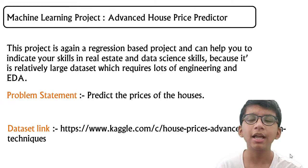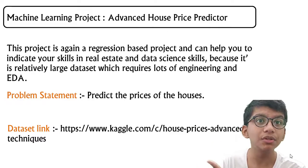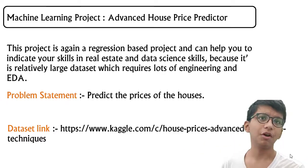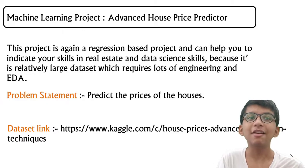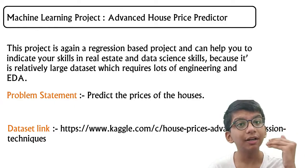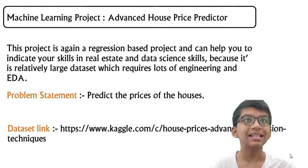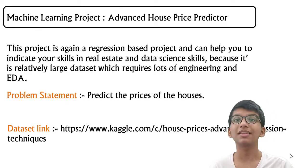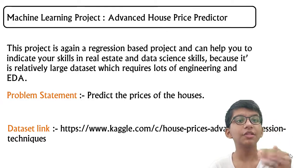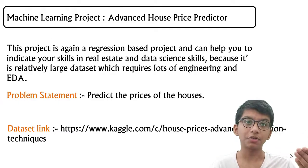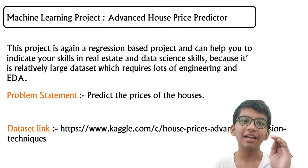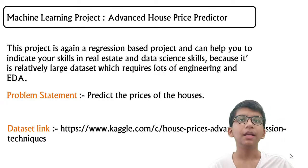Even beginners can work on this project. You can model it using random forest, XGBoost, gradient boosting, decision trees, CatBoost, ensemble learning methods, stacking, or deep learning if you want — but remember deep learning is not always best. Ensemble learning works very well for this real estate problem. So far we've covered two medical projects (diabetes and heart failure), a stock price predictor, and the advanced house price predictor.